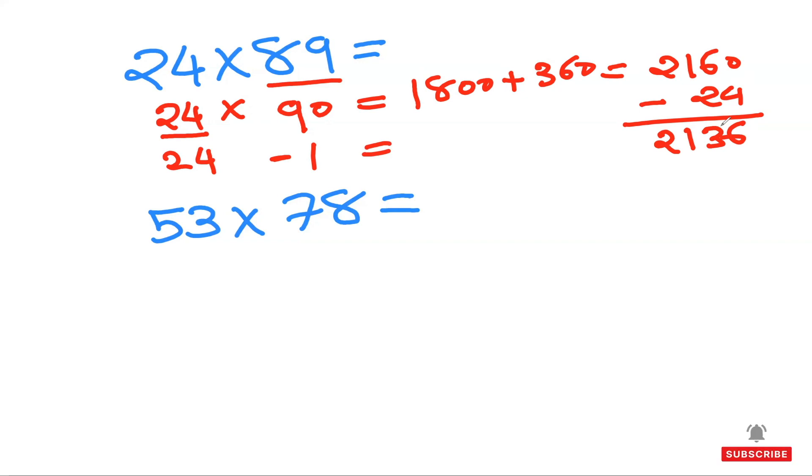So if you do that nicely quickly, you can definitely do that in less than three seconds. The second question here is 53 times 78. So 78 I'm going to split as 80 and minus 2. I'll be multiplying both of them by 53 and 53.